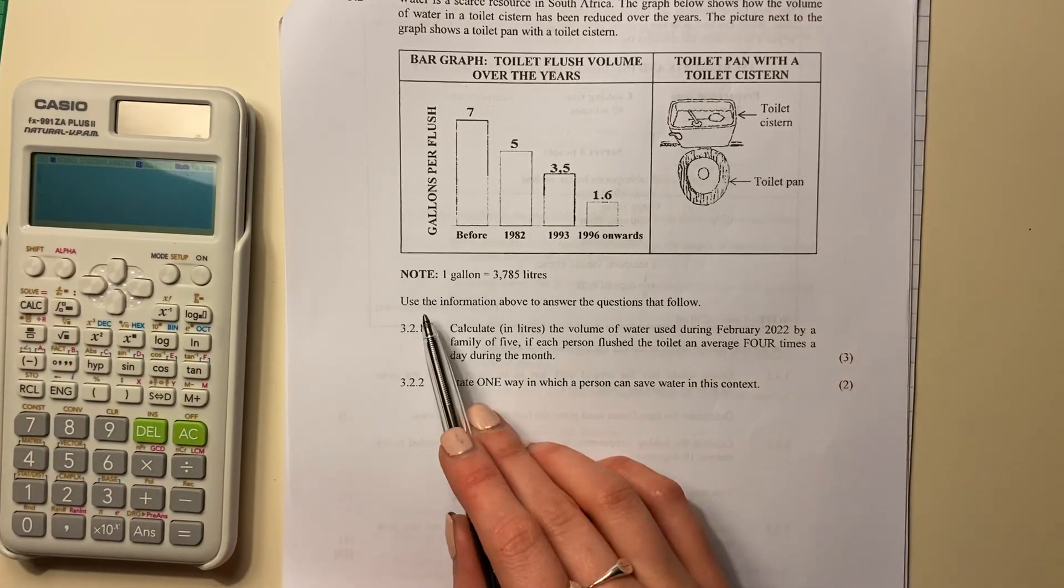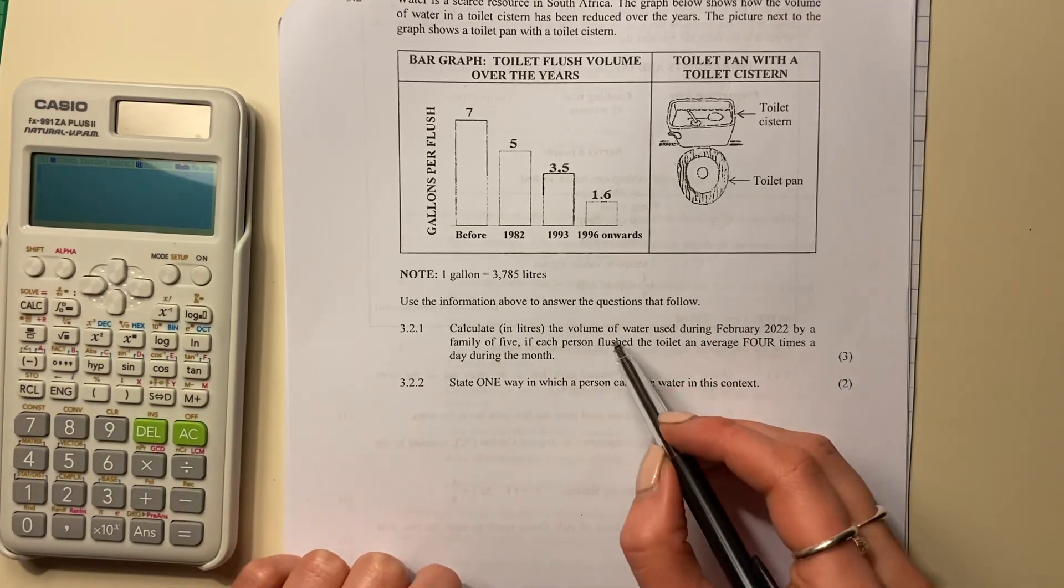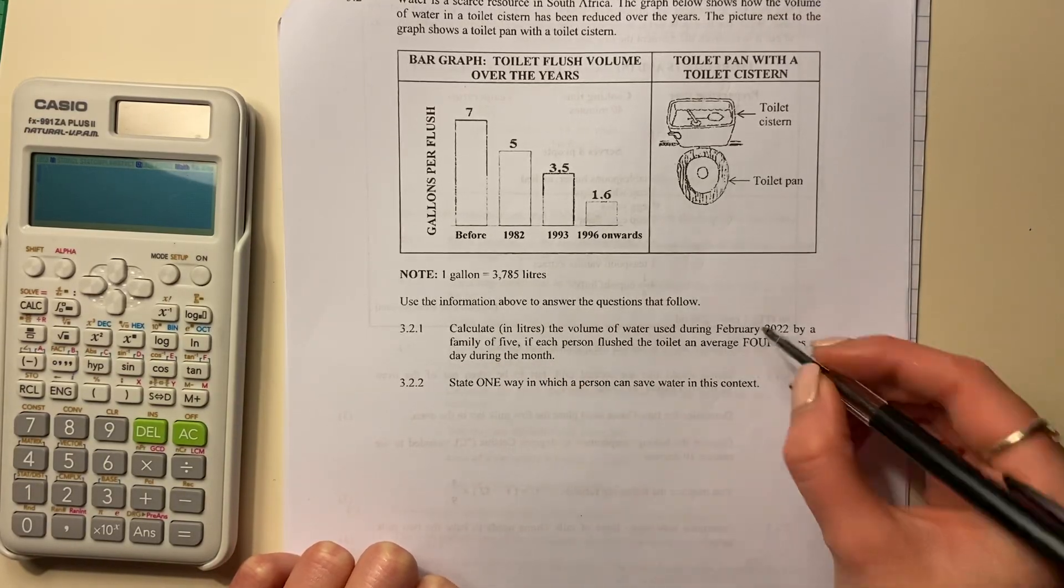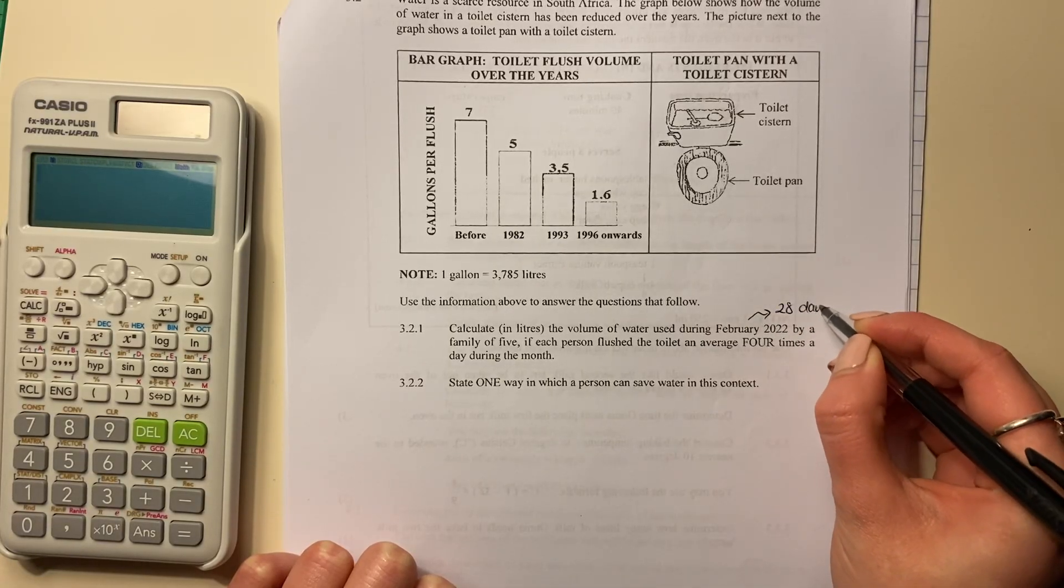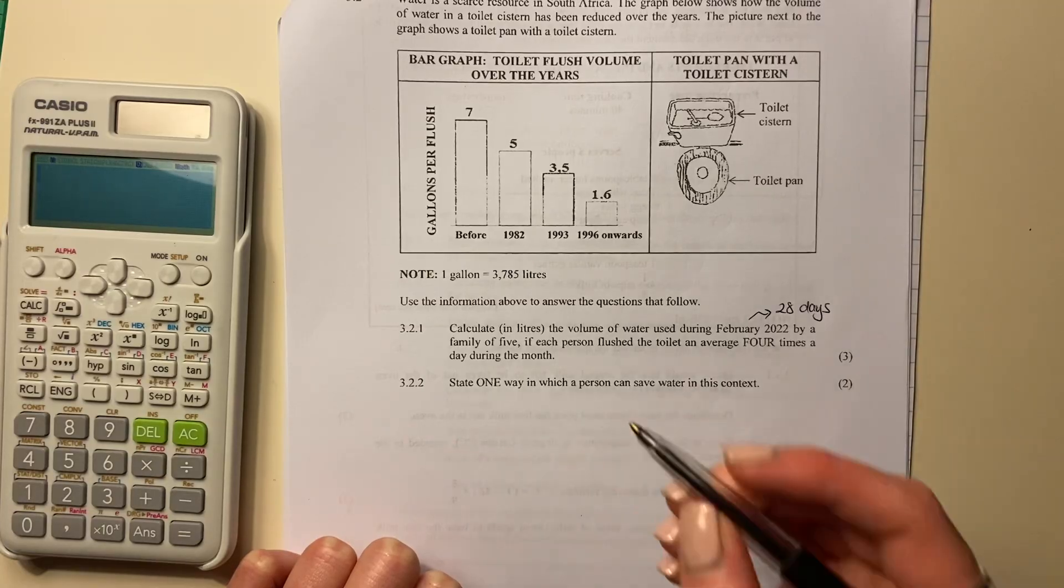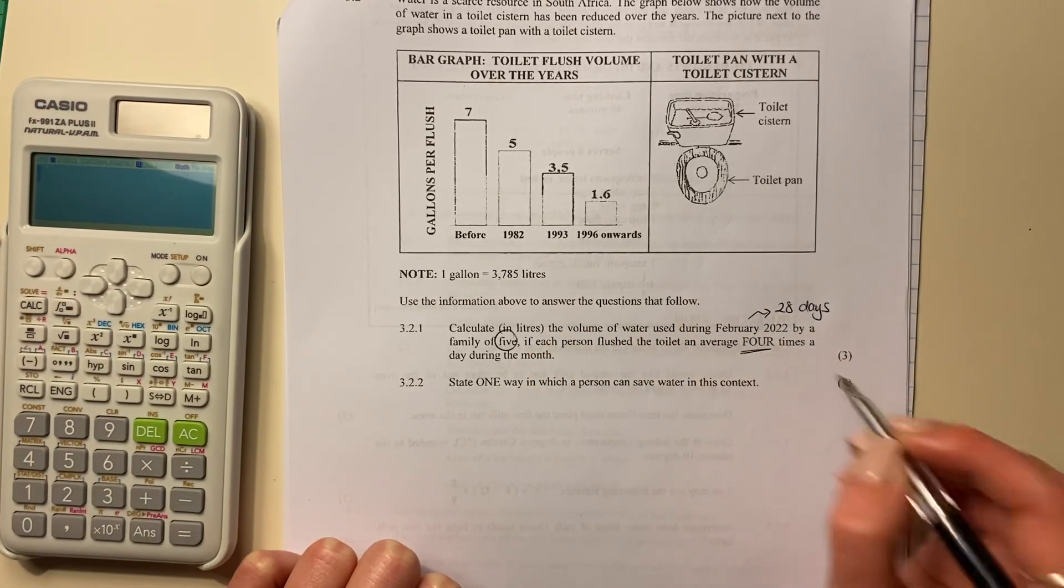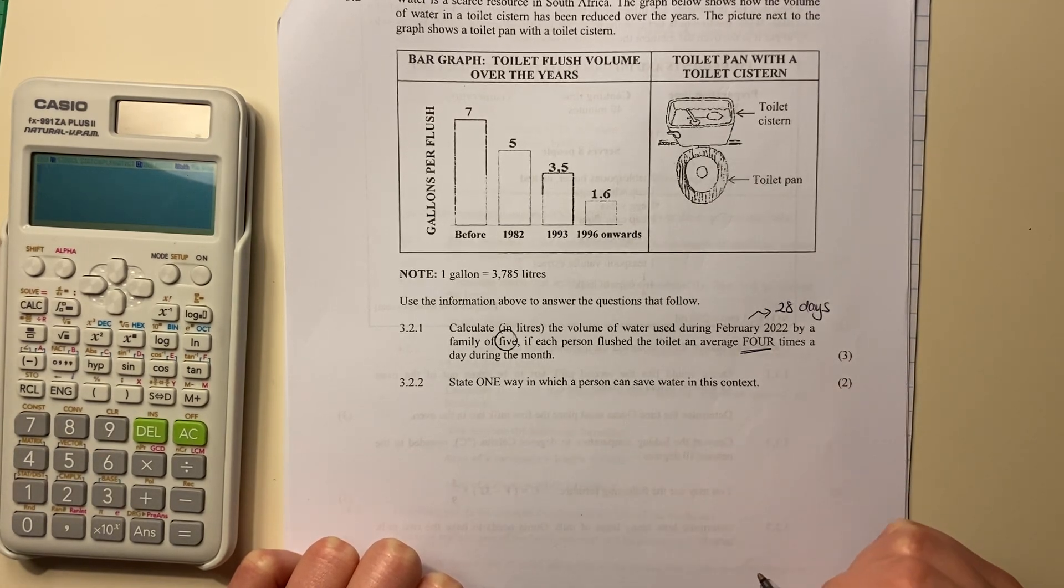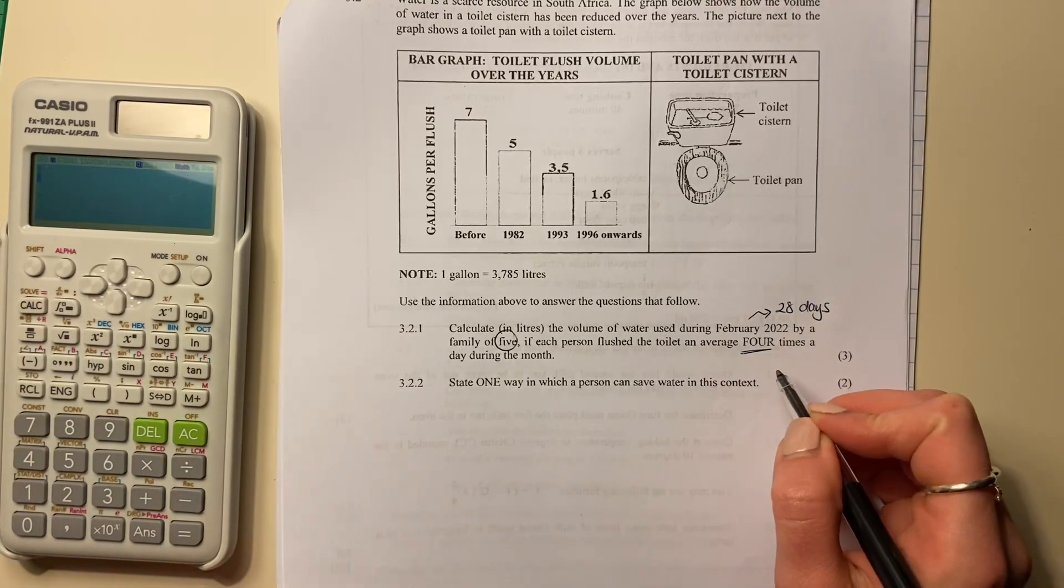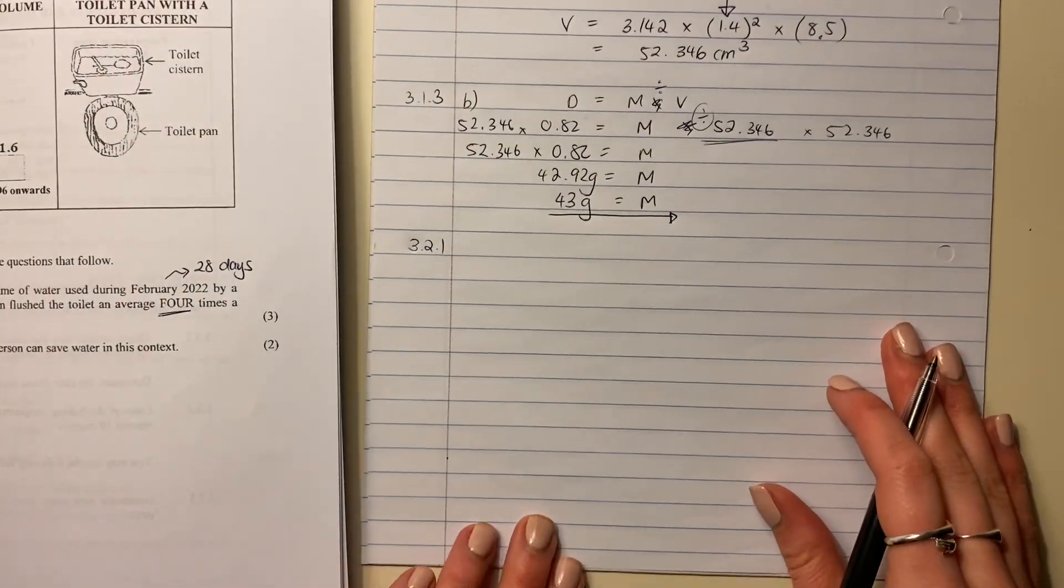So use the information above to answer the questions that follow. Calculate in liters the volume of water used during February. How many days in February? Think about it right now. 28 days. Fabulous. By a family of five, right? If each person flushed the toilet on average four times a day during the month. I thought it said four times a month, I was like, I don't know what's happening in this house, but it's four times a day per month. So let's get this right.